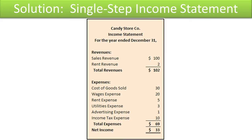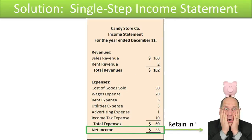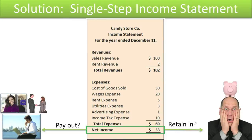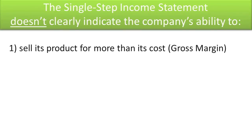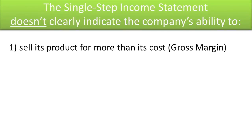Let's look at the solution to see how you did. Candy Store's owners should know that their store was profitable and that it earned $33 of net income. The owners will now have to decide whether to retain the net income in the business in their retained earnings account or to pay it out to themselves as a dividend. Although the single-step income statement does indicate whether a company was profitable or not, it doesn't highlight other key operational results of the business that users want to know, such as the company's ability to sell its product for more than its cost — gross margin.